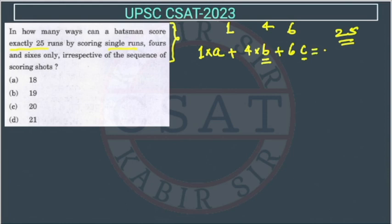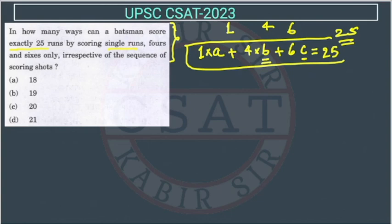So this total will be equal to 25 runs. First of all, you should get this equation. This equation is important. Now, I will tell you the easiest method for how we can approach this question. You won't find this solution anywhere. So what is the solution? Now suppose he is scoring no 6s.